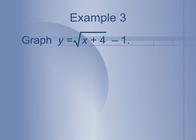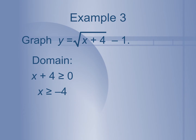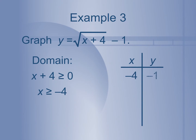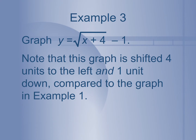Let's take a look at this graph: y equals the square root of x plus 4 minus 1. To get our domain, we set x plus 4 greater than or equal to 0, so x is greater than or equal to negative 4. That means we shift our graph to negative 4 — we shifted the parent function 4 to the left because of x plus 4. You'll also notice this graph is shifted down 1 because of the k value outside the radical, which moves the graph up or down.